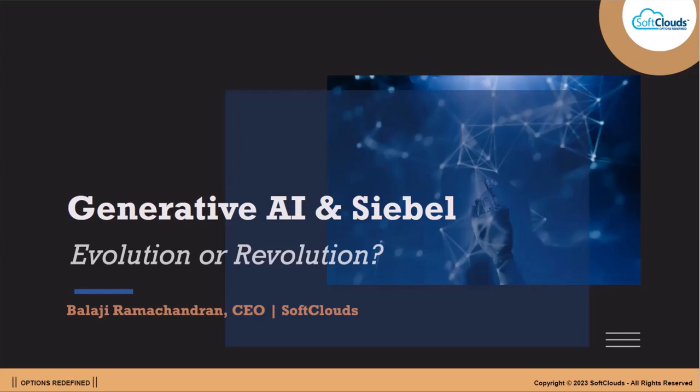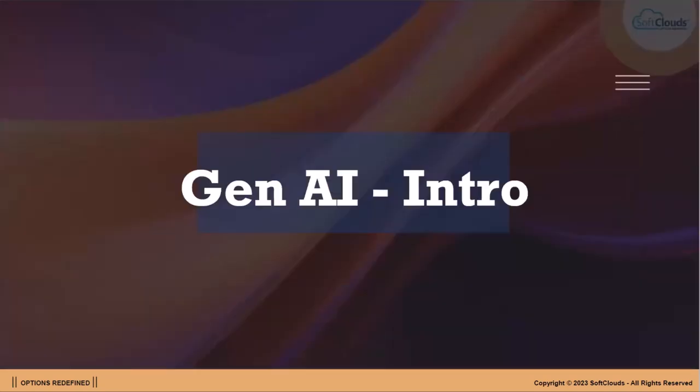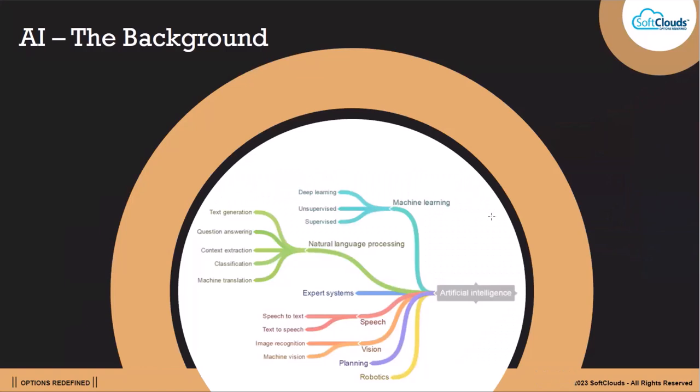Generative AI refers to models or algorithms that create brand new output — text, photos, videos, code, data, or 3D renderings — from large amounts of training data. The model generates new content by referring back to that data and making new predictions. Generative AI strives to create entirely new data that resembles human-created content.